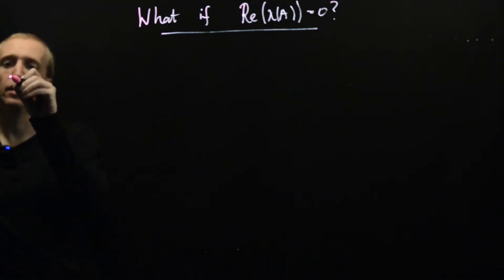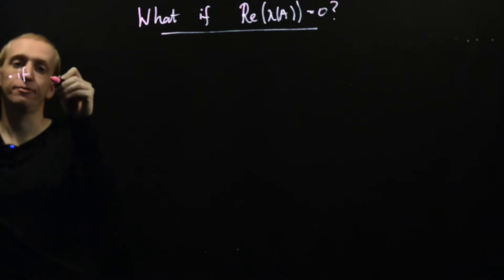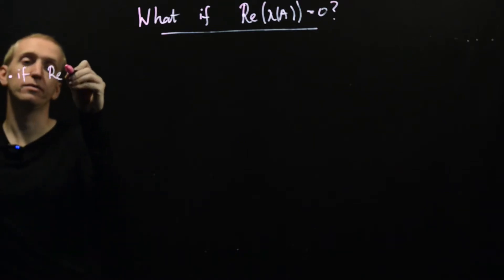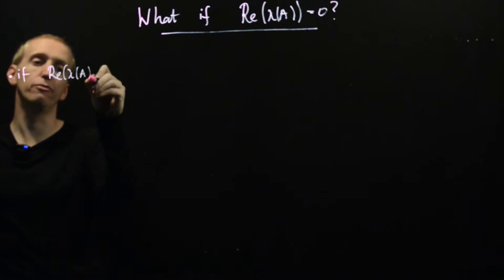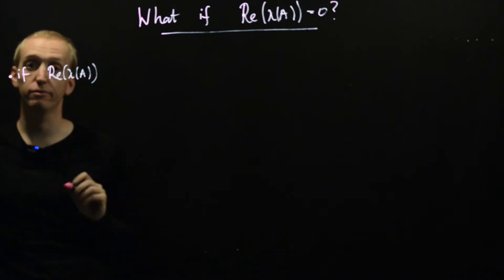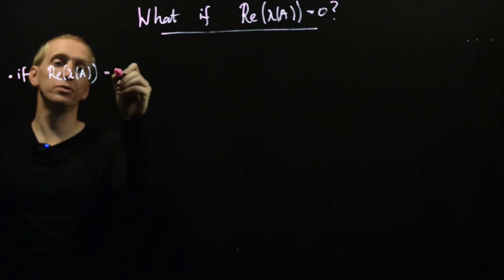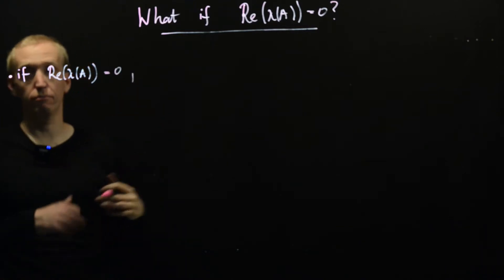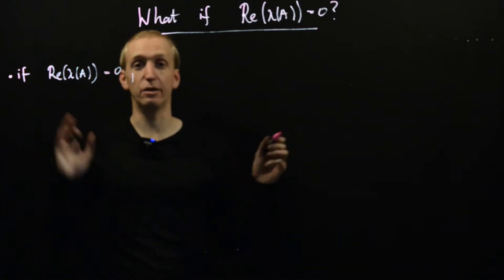is if the real part of the eigenvalues of the linearization of your system equals zero, then the linearization doesn't tell you anything.